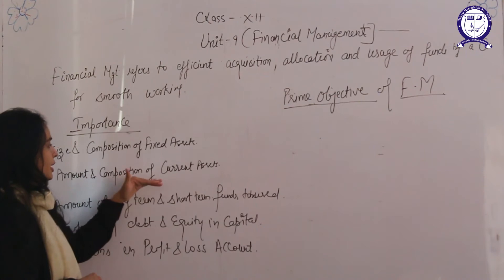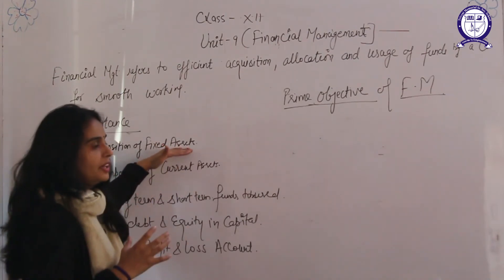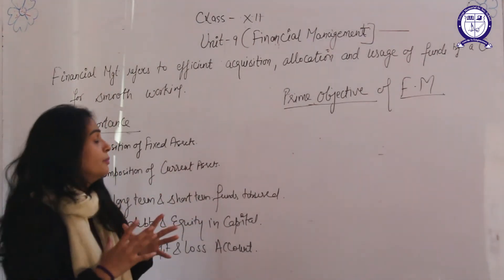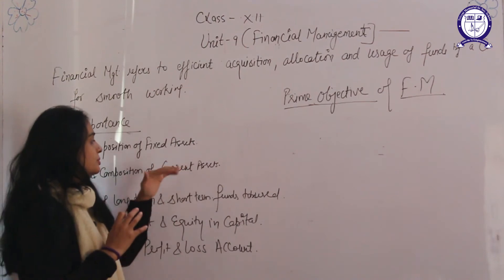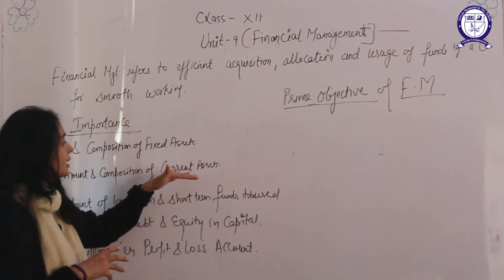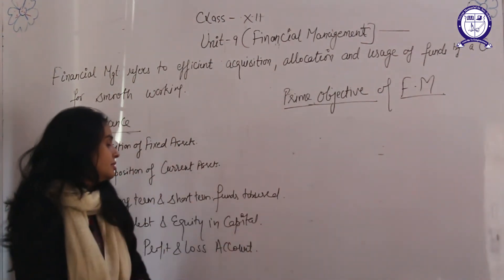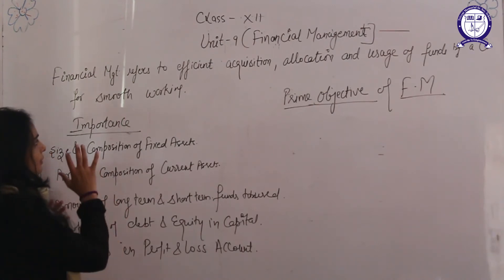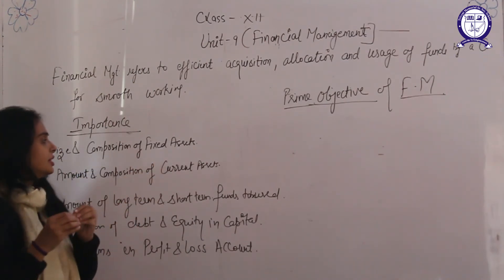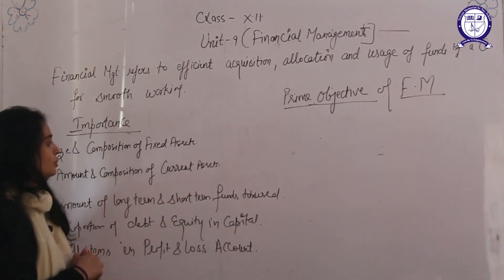The second importance is the amount and composition of current assets. Assets are of two types: fixed assets and current assets. Fixed assets affect profitability and business expansion, while investment in current assets affects both liquidity and profitability. Current assets include investment in cash, raw material, and stock. It is also necessary to run the business on a daily basis — such as payment of wages and salaries — so the total amount invested in current assets and their segregation must be decided under financial management.